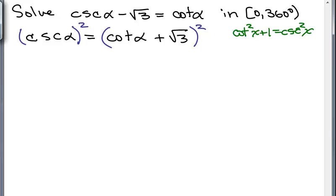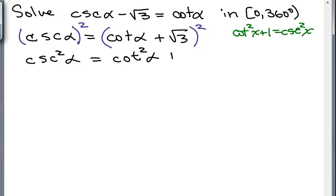On the left side we've got cosecant squared alpha. On the right side, remember this is a binomial — cotangent of alpha plus square root of 3 — times another cotangent of alpha plus square root of 3. Using FOIL: that's the first term squared, plus 2 times cotangent alpha times square root of 3, so 2 root 3 cotangent alpha, plus the last term squared — square root of 3 times square root of 3 is 3.